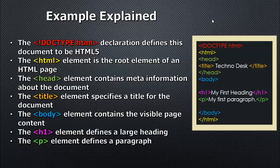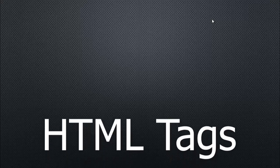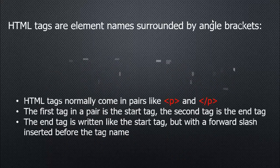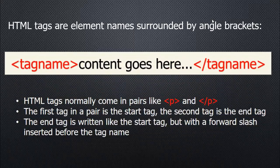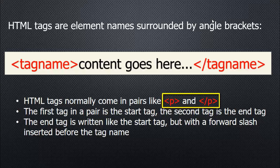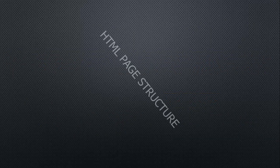An HTML tag is surrounded by angle brackets — the first angle bracket, then the tag name. The tag name can be html, body, p, h1, h2, and so on. So the format is: opening angle bracket, tag name, closing angle bracket. It should be ended by opening angle bracket, slash, tag name, closing angle bracket. HTML tags normally come in pairs, like the opening p tag and the closing p tag. The first tag in the pair is the start tag and the second is the end tag. Every tag starts with a start tag and ends with an end tag.